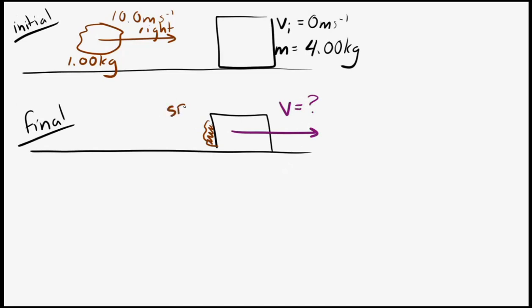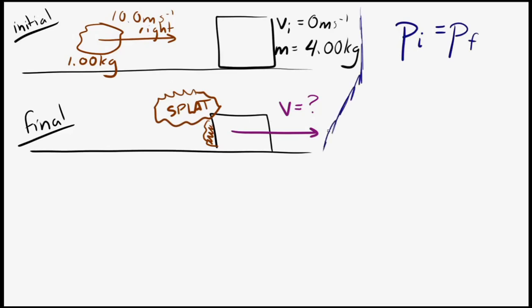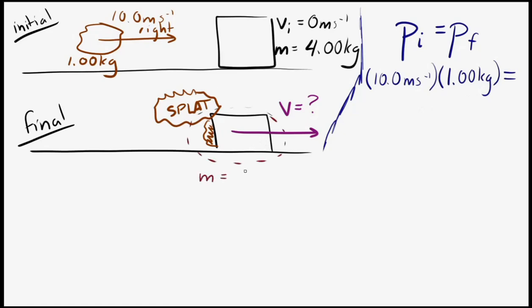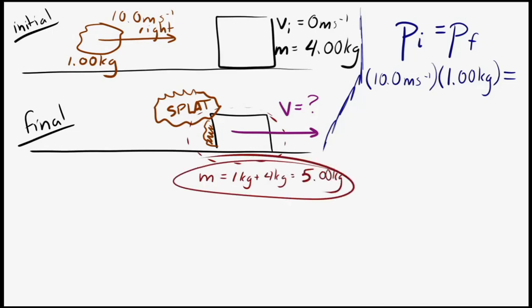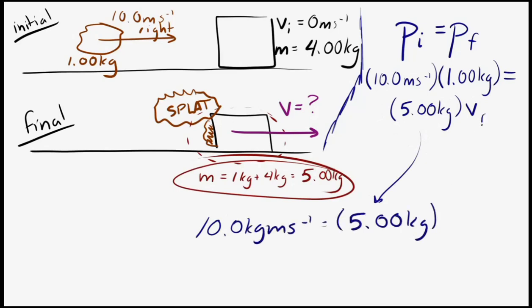This is a collision with no external net force on either object, so pi equals pf. The initial momentum is the momentum of the clay plus the momentum of the block, which is zero since the block is at rest. That equals the final momentum: the combined mass of five kilograms — clay plus block — multiplied by their shared final velocity vf. Solving, we find vf equals two meters per second, and the positive value means it moves to the right.